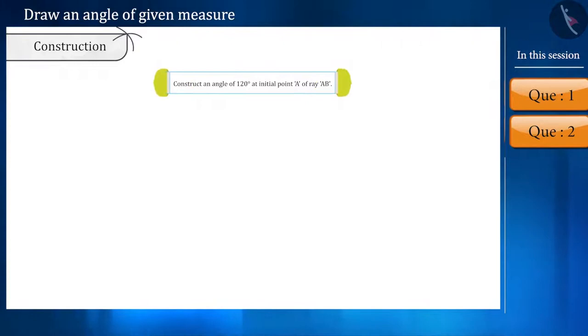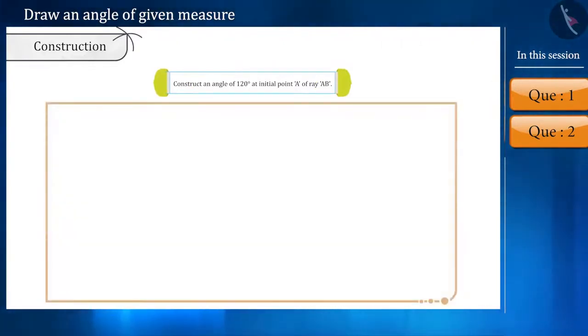So now, if we have to construct an angle of 120 degrees, what will we do? Here, first an angle of 60 degrees will be constructed like we did in the previous question.